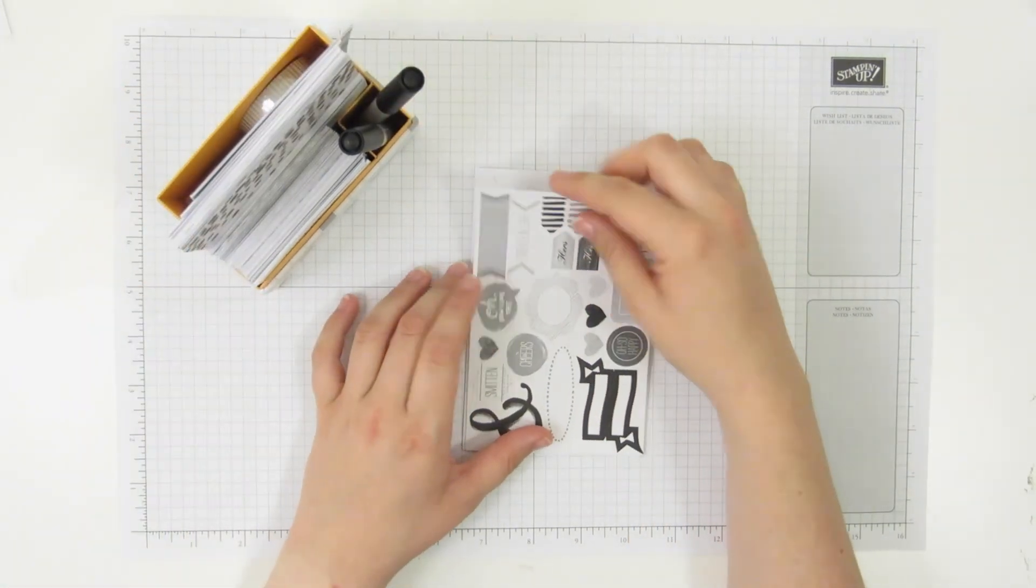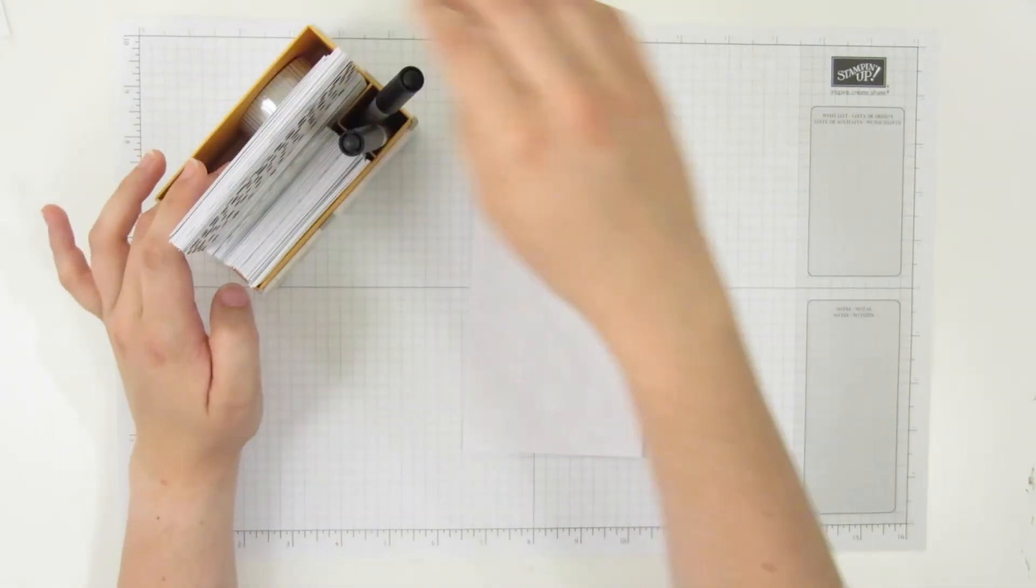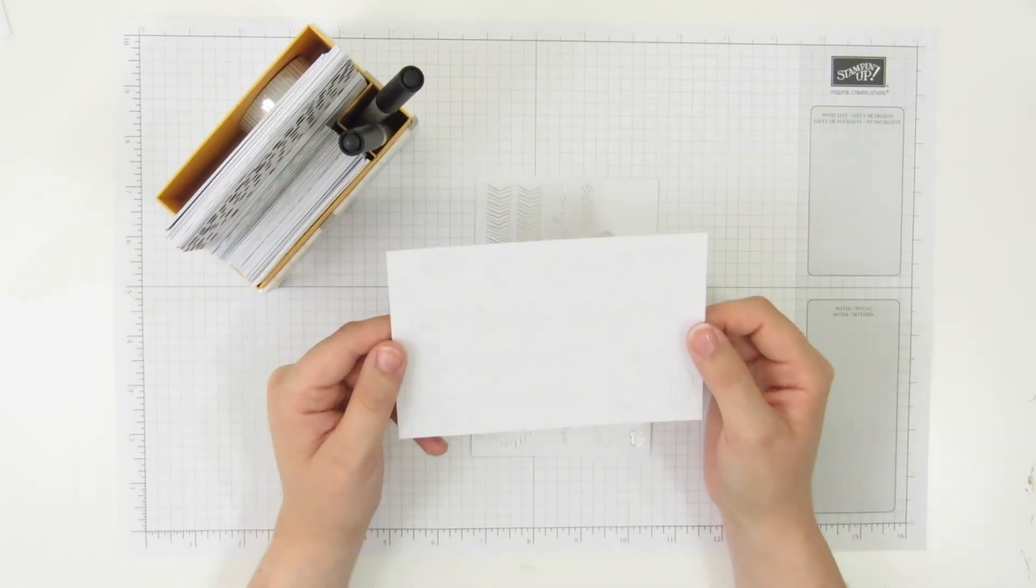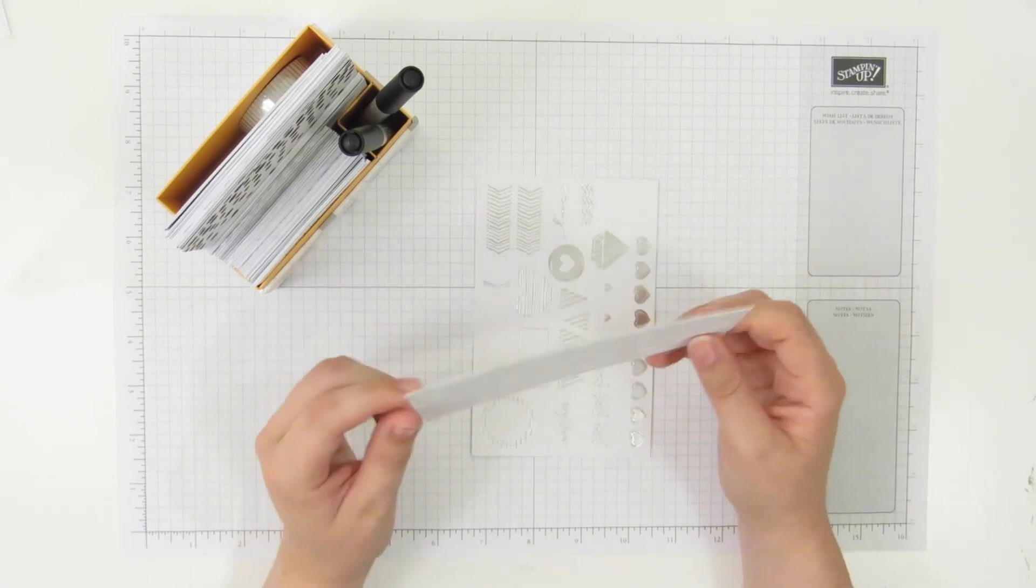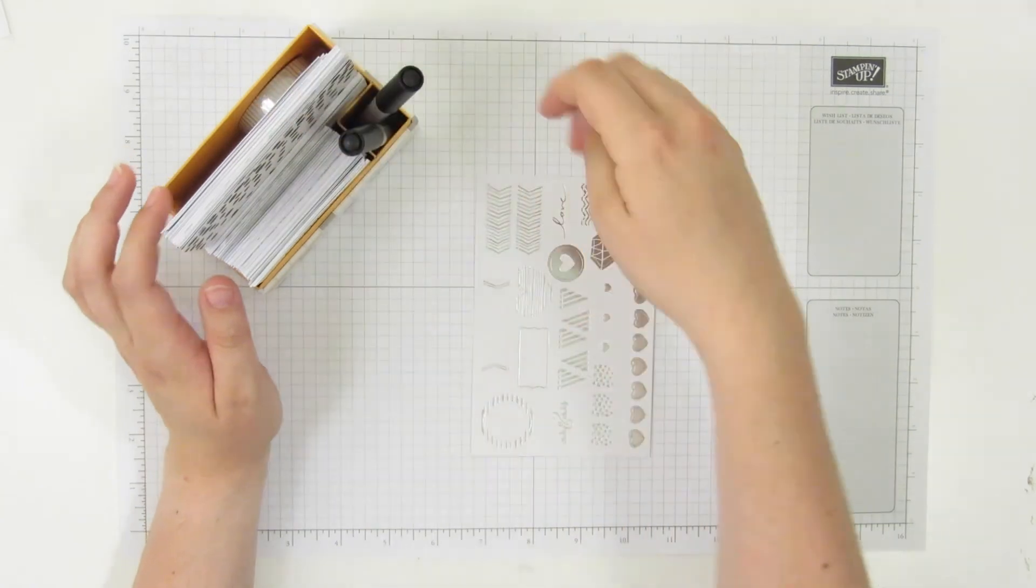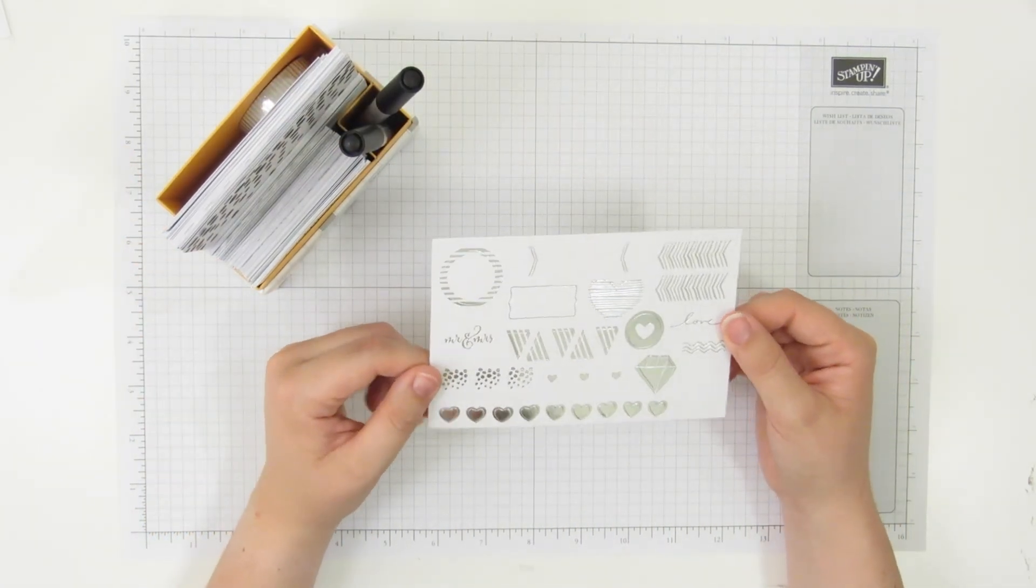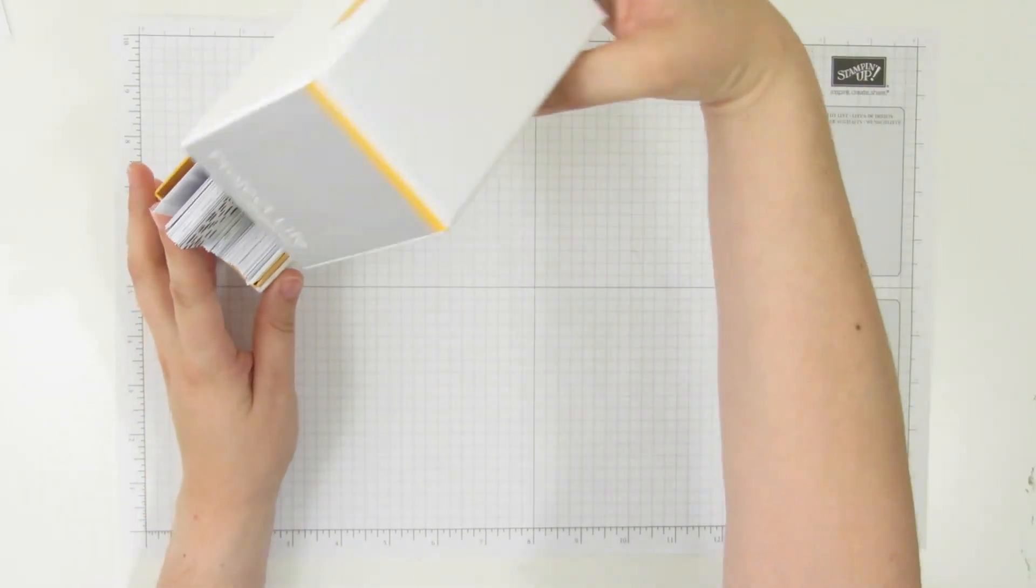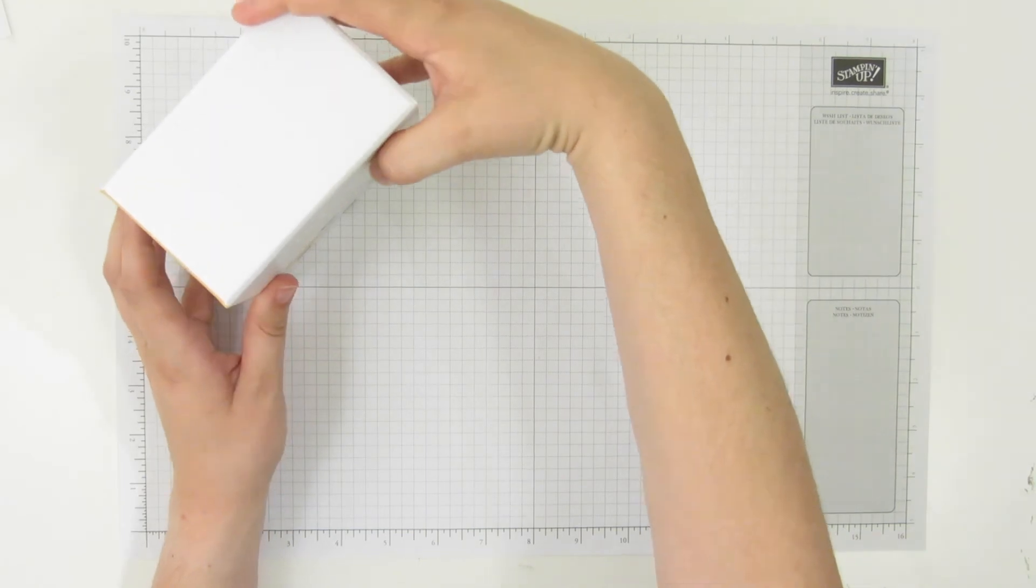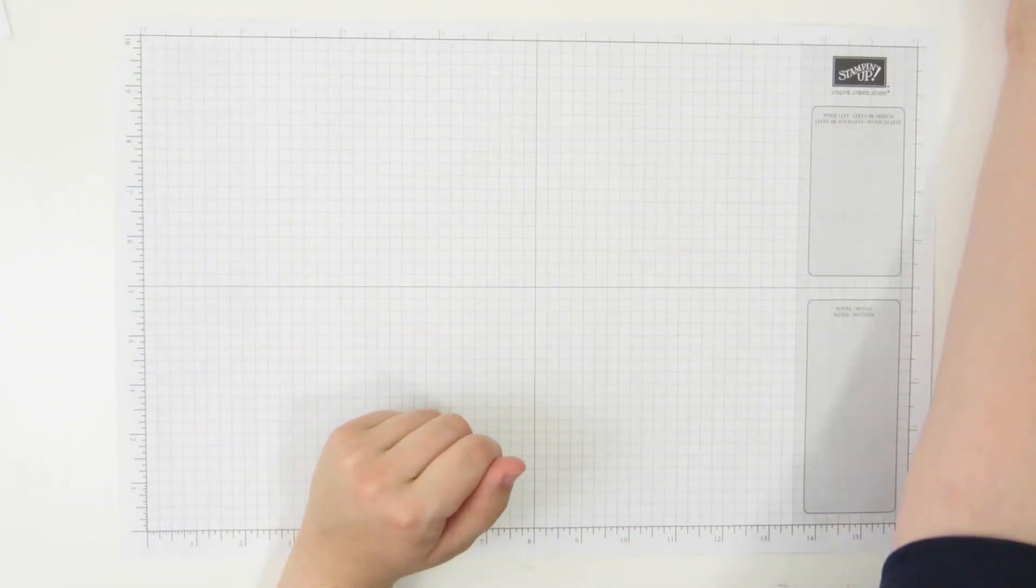And then we've got some regular stickers as well. So here we've got just some printed stickers. These are some die cut words and some shapes. And then we've got some silver foil stickers as well. And then that all tucks back into your card collection box and sits on your shelf. Doesn't take up a lot of room.